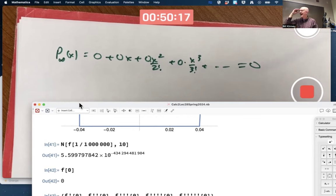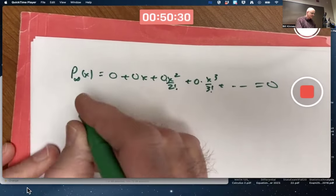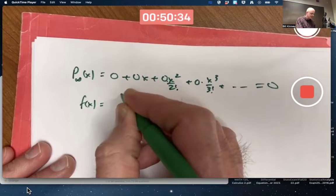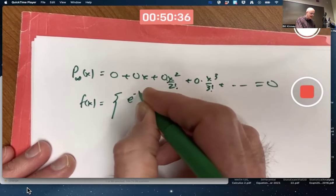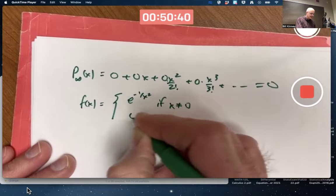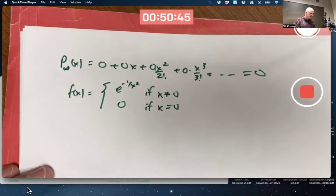A function does not have to equal its Taylor series. Here's one example, maybe the simplest example. You might wonder, could I really prove that f prime of zero is zero? I mean, f of x is a piecewise function: e to the negative one over x squared if x is not zero, and zero if x equals zero. Could I really prove f prime of zero is zero?